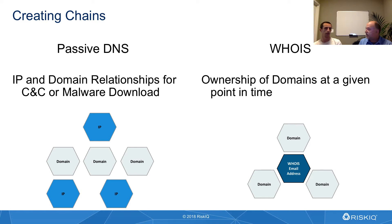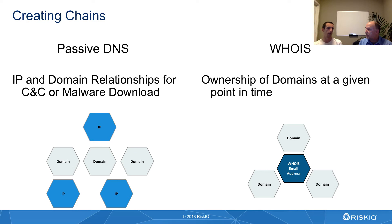And so if we think back to the methodology and the infrastructure chains, how do these data sets that we just introduced map into that world? Well, if we're looking at something like passive DNS, where we have the IP and domain relationships, we might have a starting point where it's an IP address.